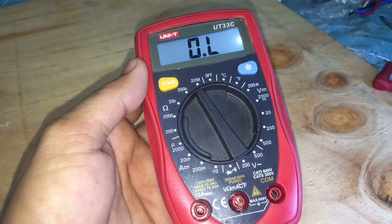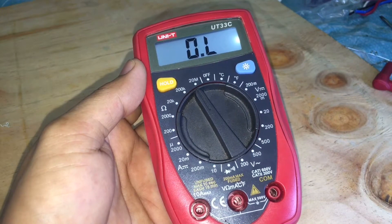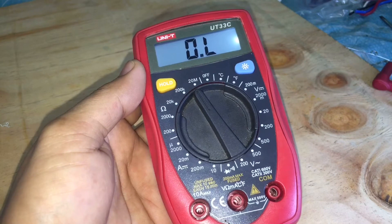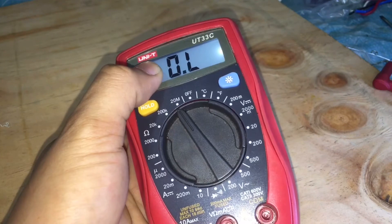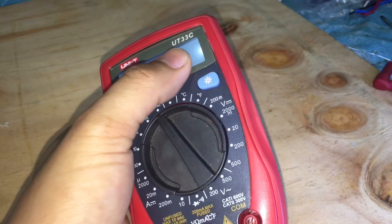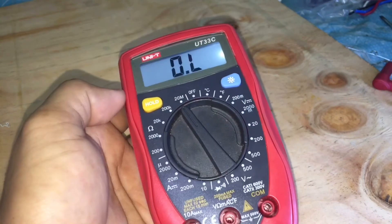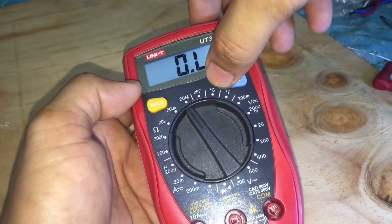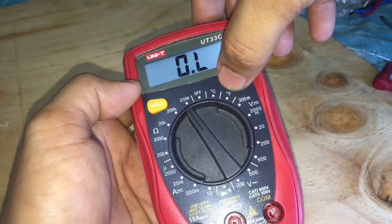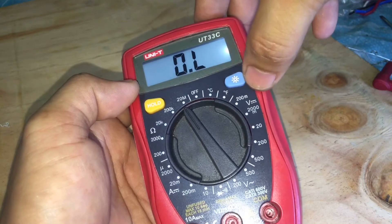Hello everyone, welcome back to my channel. Today I will show you how to read a multitester with the model UT-33C. First we have a temperature gauge with degree Celsius and degree Fahrenheit.